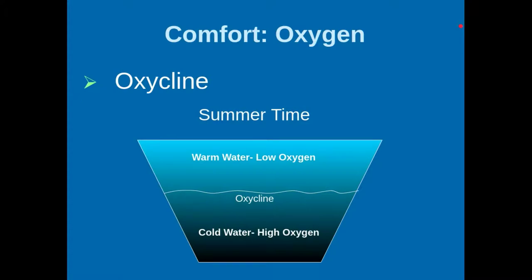Let's talk about the oxycline — not the laundry detergent. The oxycline is like the thermocline. It's the boundary layer between two densities of oxygen. Right here on this illustration we can see that the warm water, which has lower oxygen, is sitting on top of the colder water, which has the higher oxygen concentration.